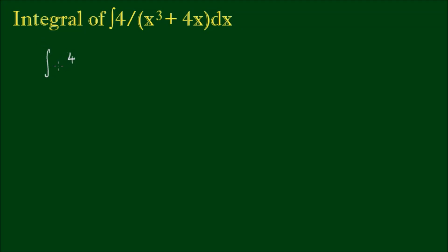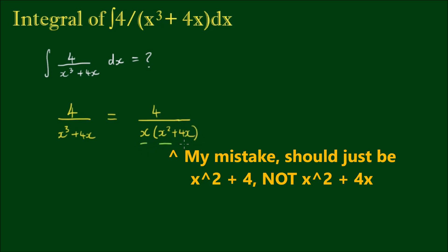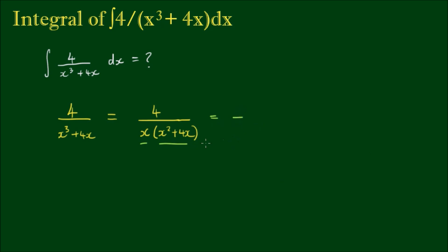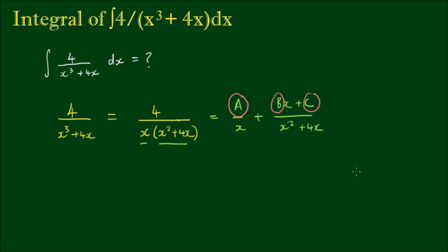Let's have a look at the integral of 4 divided by x cubed plus 4x with respect to x. Initially when we look at this we might think of this as a partial fractions problem. With the integrand 4 divided by x cubed plus 4x, we can factorize an x out of the denominator, giving us x times x squared plus 4. We can then separate the terms into partial fractions: some constant over x plus a linear expression bx plus c divided by x squared plus 4, and solve for all the coefficients before executing the integral.